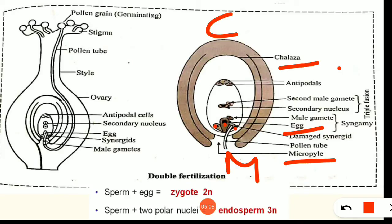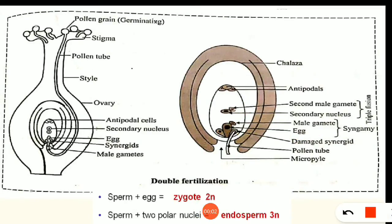Ab jo do male gametes hain humaare pollen tube mein, us mein se ek male gamete jaane wala hai egg ke paas, doosra wala jaane wala hai kahaan pe — polar nuclei hai, that is secondary cells ke paas jaane wala hai, jo middle mein hai. Aur jo tube nucleus saath mein aaya tha pollen tube ke, woh bhi degenerate ho jayega jaise hi pollen tube ka bursting ka process ho jaata hai. Toh ek male gamete, jo first male gamete hai, woh egg ke paas jayega — that is the oosphere — ek cell ke paas kya karne wala hai, fertilization karne wala hai. Kyunki humaara egg bhi haploid hai, humaara male gamete bhi haploid hai, toh humko kya milega — diploid zygote milega. Kyunki sperm bhi haploid hai aur humaara egg bhi haploid hai, toh humko jo zygote milega woh hoga diploid.